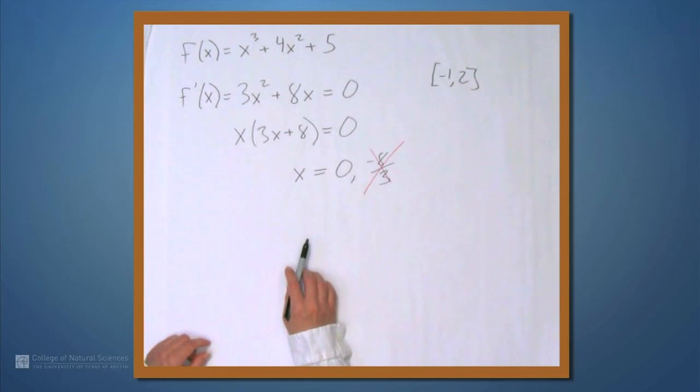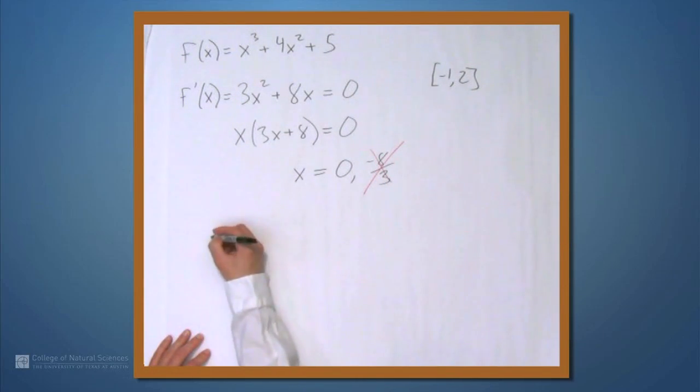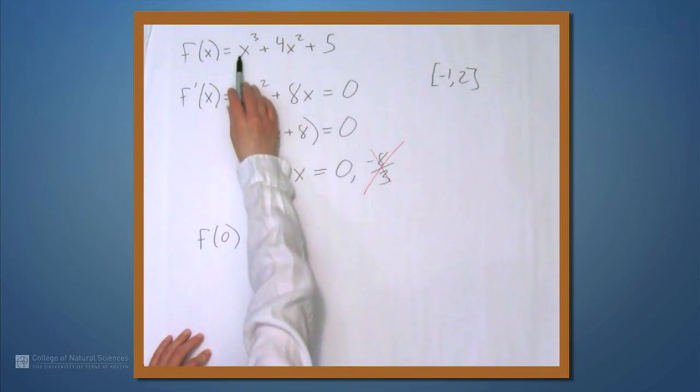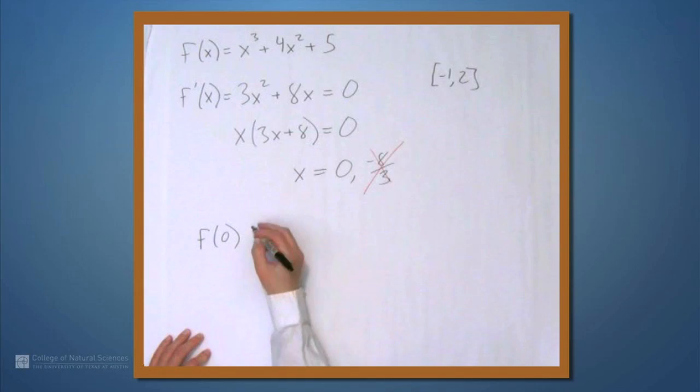We have one value at which we want to check the derivative. We also have to check the endpoints, though. So, let's evaluate. f of 0 is going to be 0 plus 0 plus 5, which is 5.